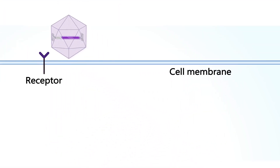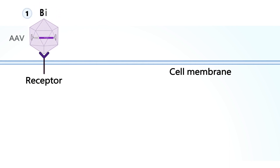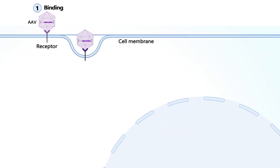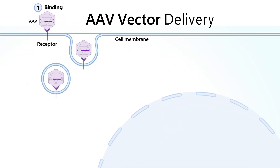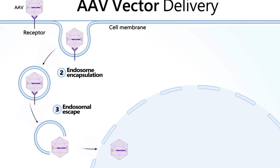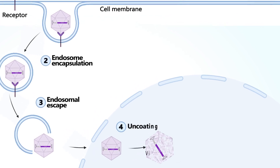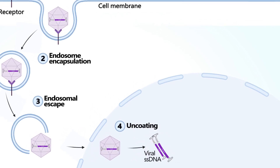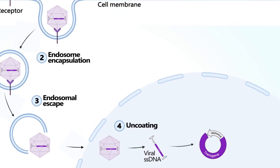Upon administration, the AAV capsid binds to the cell membrane and becomes encapsulated into a vesicle. The vesicle is degraded, allowing the capsid to enter the nucleus. Upon entry into the nucleus, the capsid is degraded, exposing the transgene to the nucleus, where it forms episomal DNA and does not integrate into the genome.